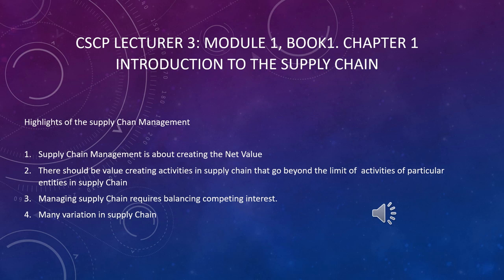Here come the four highlights of supply chain management which we discuss in this lecture. Number 1: supply chain management is about creating net value. Number 2: there should be value-creating activities in the supply chain that go beyond the activities of a particular entity. Number 3: managing the supply chain requires balancing competing interests. Number 4: there are many variations in the supply chain.